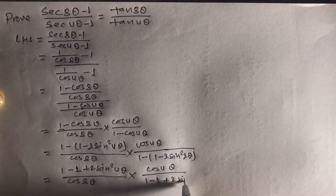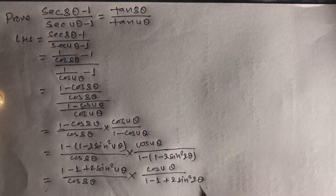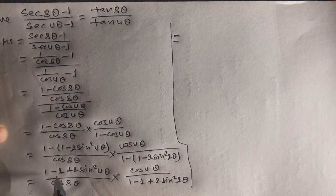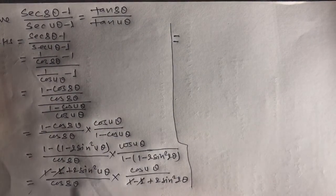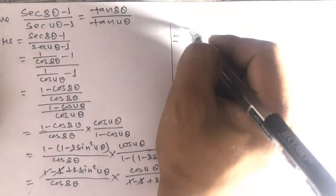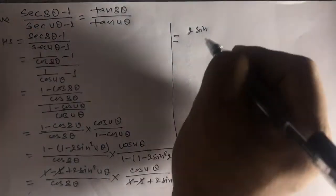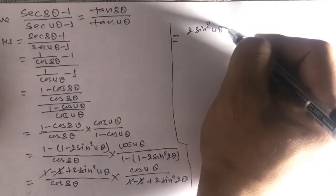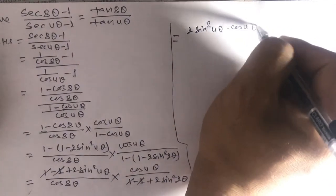After substitution, the 1s cancel out and we have 2sin²4θ in the numerator. The expression simplifies to 2sin²4θ multiplied by cos4θ, divided by cos8θ and 2sin²2θ.